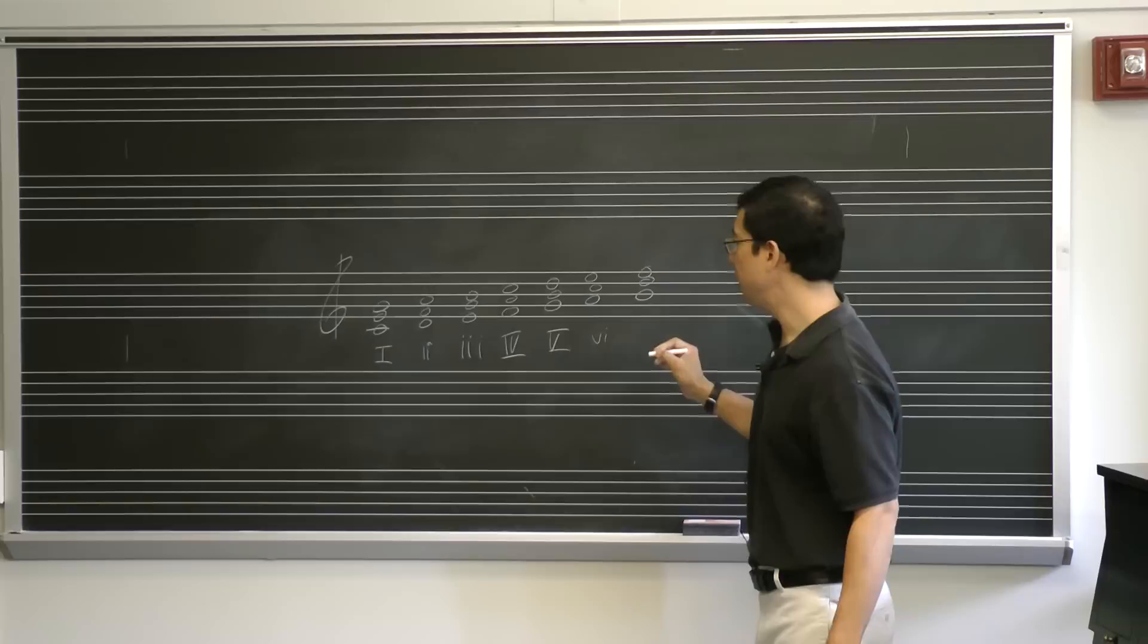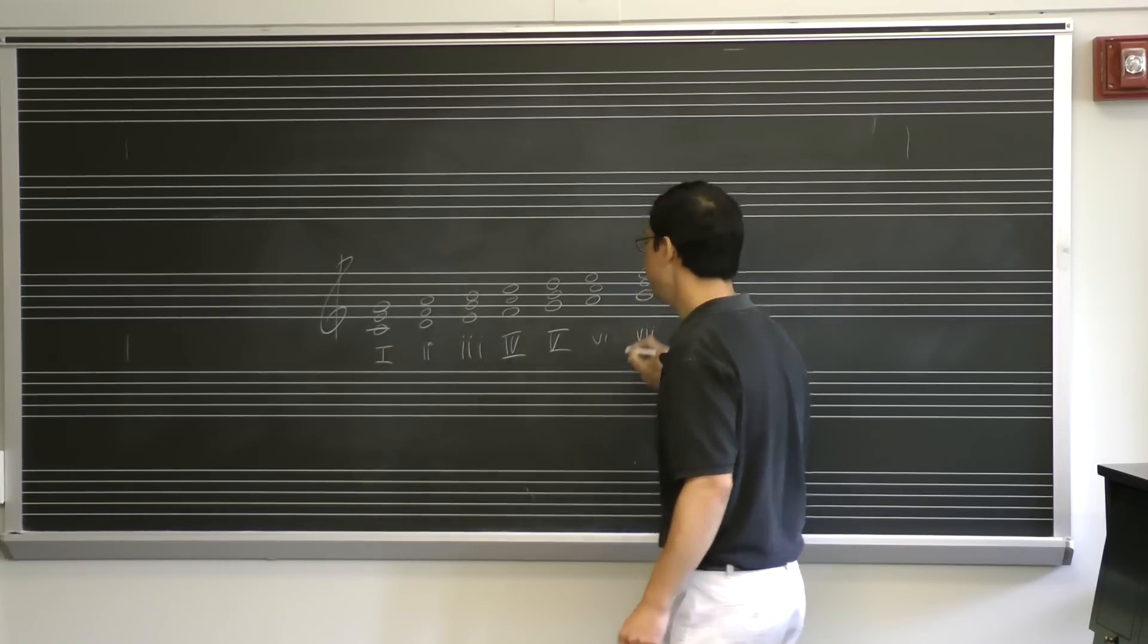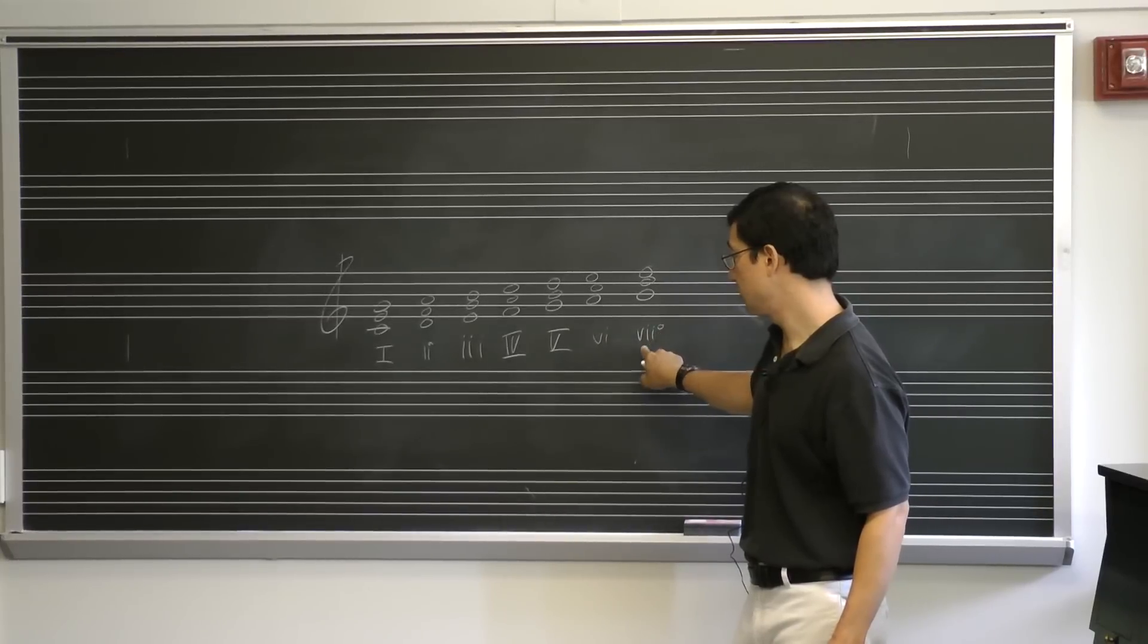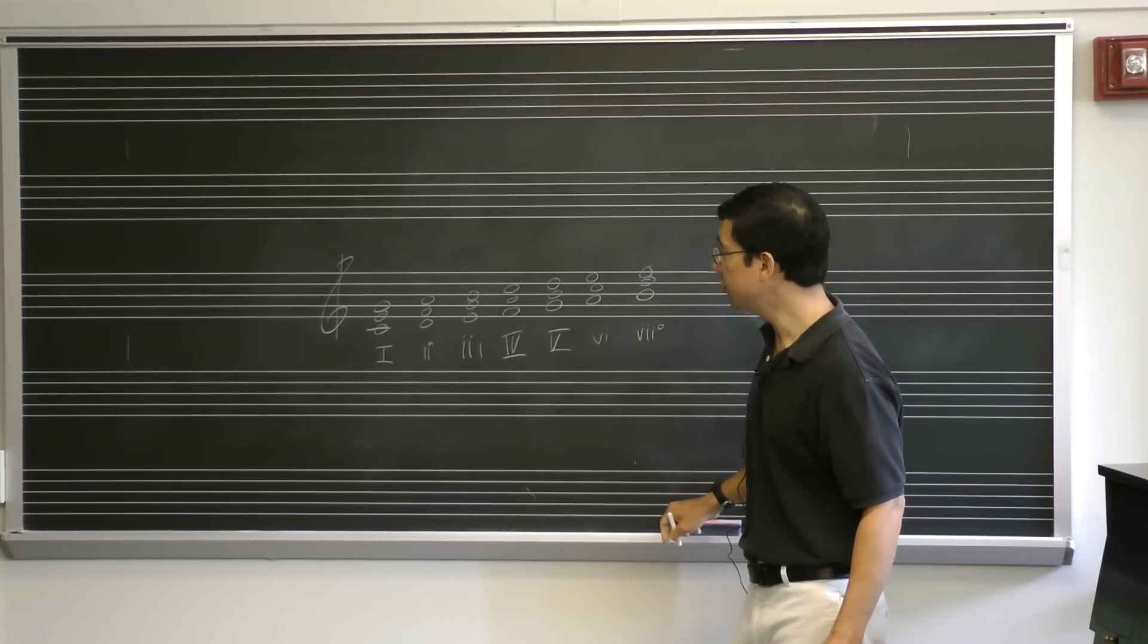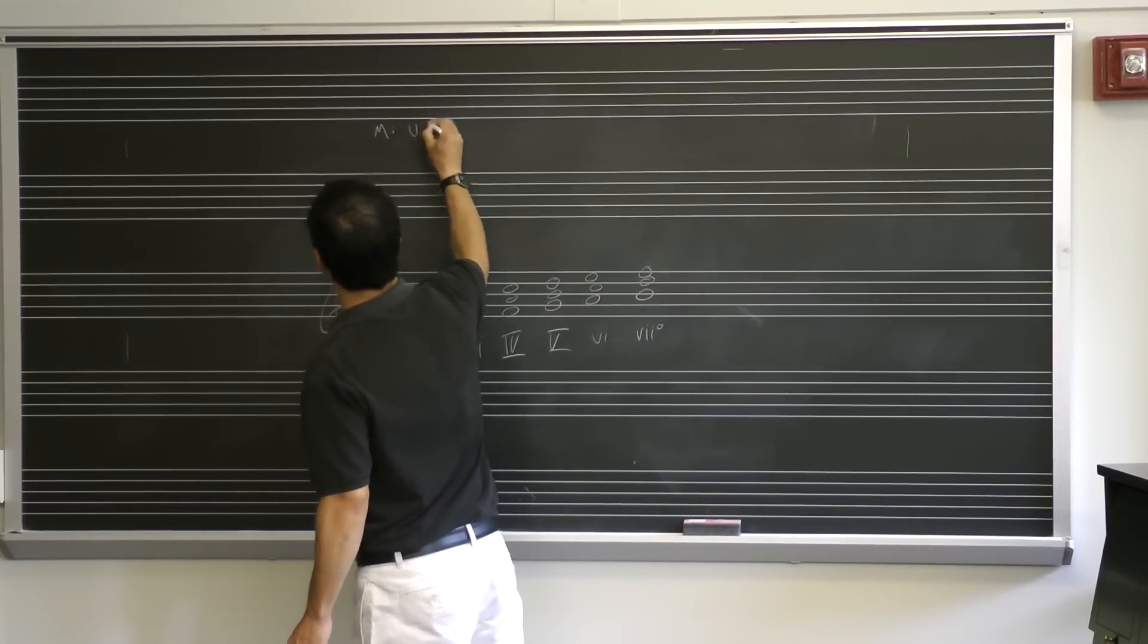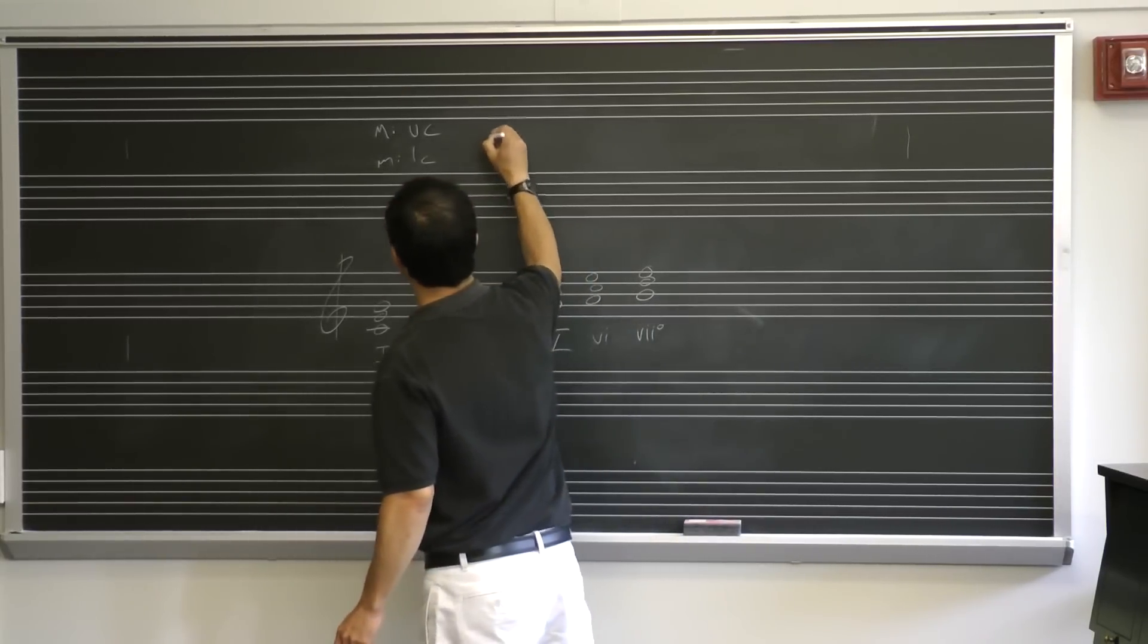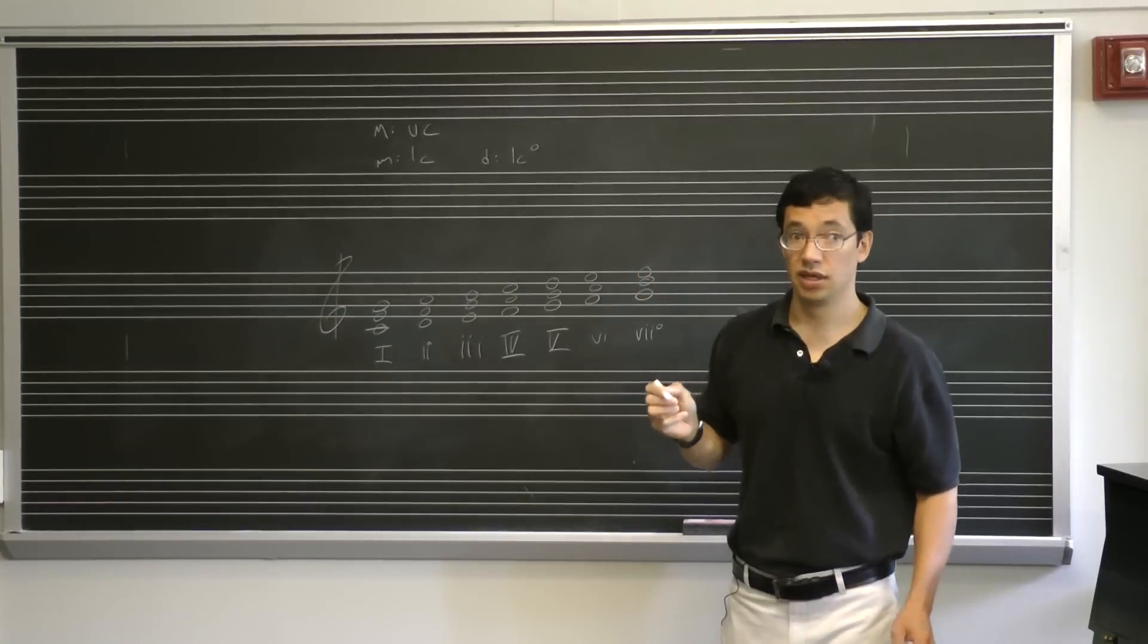Now what do I do if I have a diminished triad? Because this is what I get on seven. I use a lowercase Roman numeral and I follow that by a little degree sign, a little circle right there. So that is my symbol for a diminished triad. So if I put a general key up here, major is uppercase, minor is lowercase, diminished is lowercase with a circle.